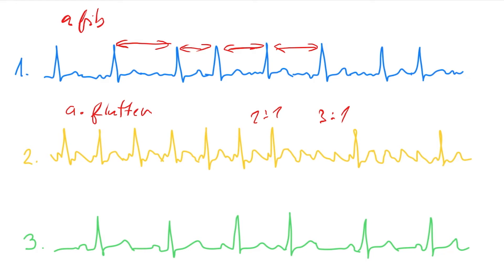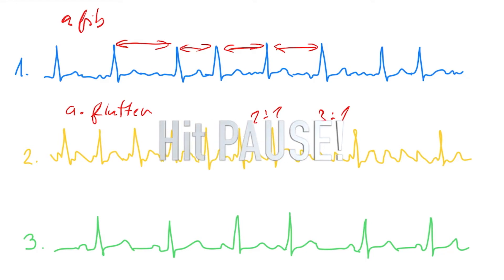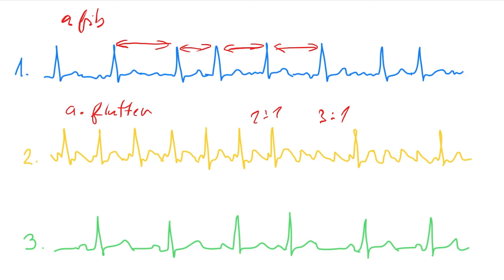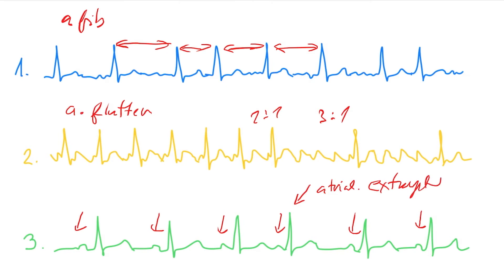Third one. What is that? Here's a P, P, P. Do I have a P, P, P? Yeah? So which one is this one? It's atrial. Atrial. That's the one. Yes, that's the one. Very good. So that's this one.